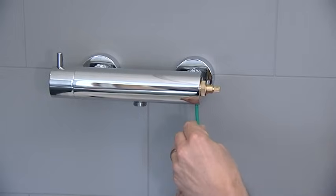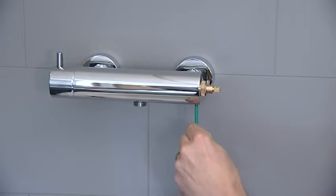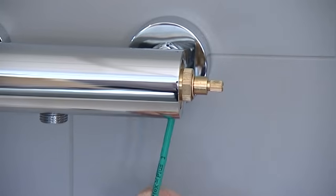Undo the grub screw on the underside of the body. Pull to remove the cartridge.